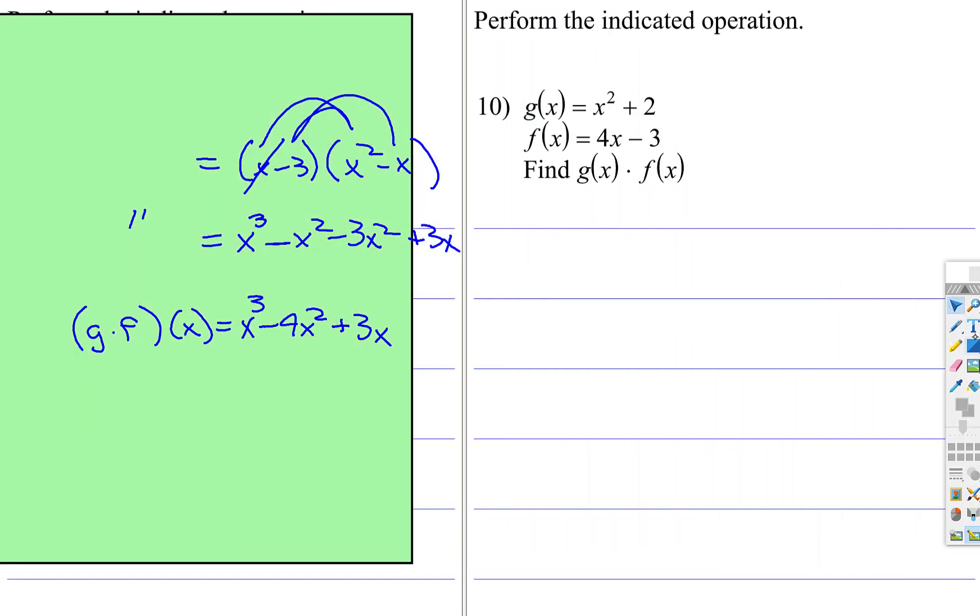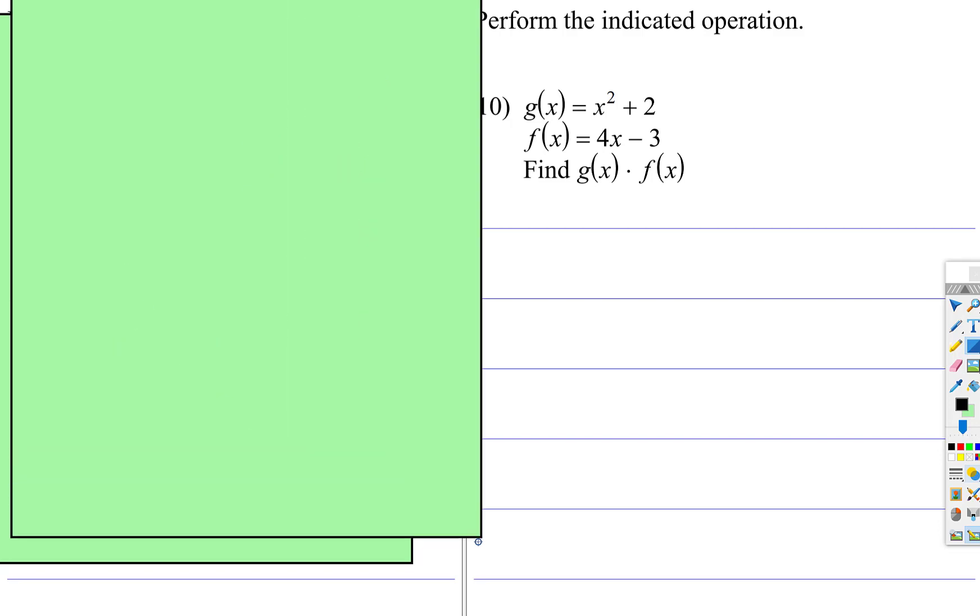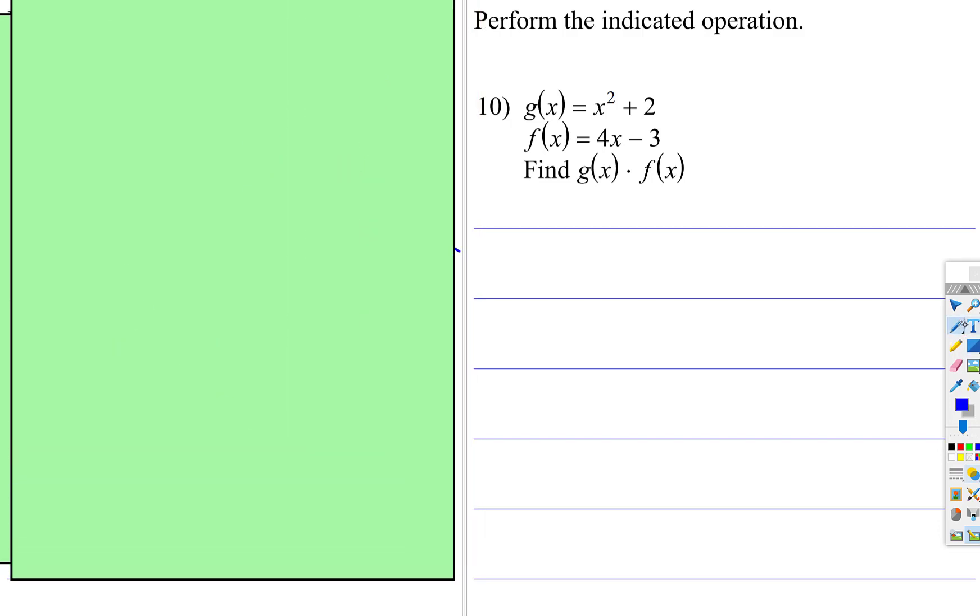And that's with this notation. The other notation, let's cover all this up, is when you notate it this way. G function, g of x times f of x. Same thing, so x squared plus 2 times the expression 4x subtract 3.